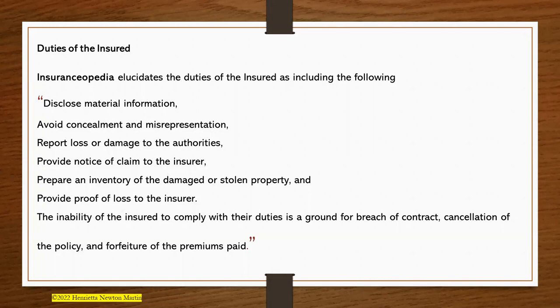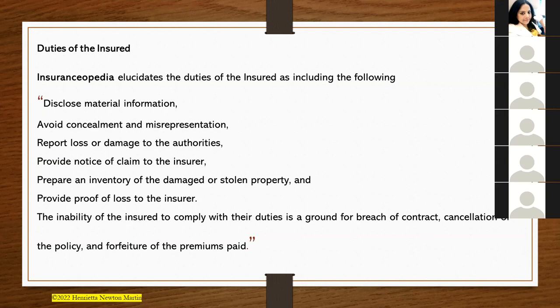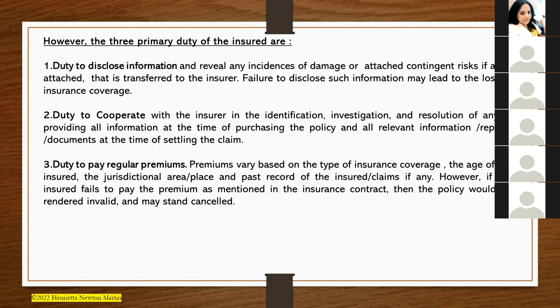The inability of the insured to comply with these duties is a ground for breach of contract, cancellation of the policy, and forfeiture of premiums. If a person indulges in any of these activities, it would be considered a material breach of insurance contract. The contract can be cancelled, the policy can be cancelled, and the premiums paid can be forfeited — meaning the insurer will not return whatever you have paid.